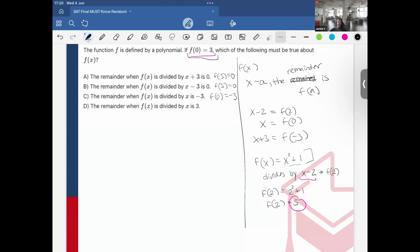And then finally, the last choice would be when f(x) is divided by x, so f(0) is equal to 3. And we can see that that directly matches what I have up in the answer choice. So therefore, D must be true.